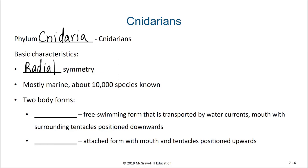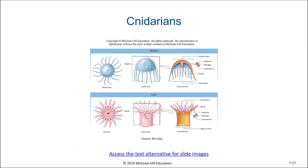There are two basic body plans when it comes to cnidaria: those of the free-swimming medusa or of the attached polyps. They have the same basic body plan, just oriented slightly differently. Regardless of whether we're talking about a medusa or a polyp, there's a single opening that serves both as the mouth and the anus, and there are two layers of tissue: the epidermis and the gastrodermis.